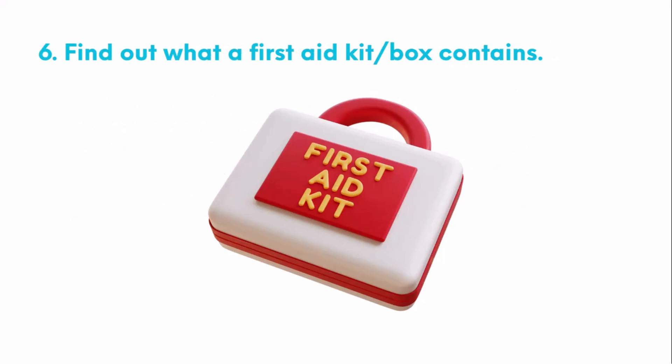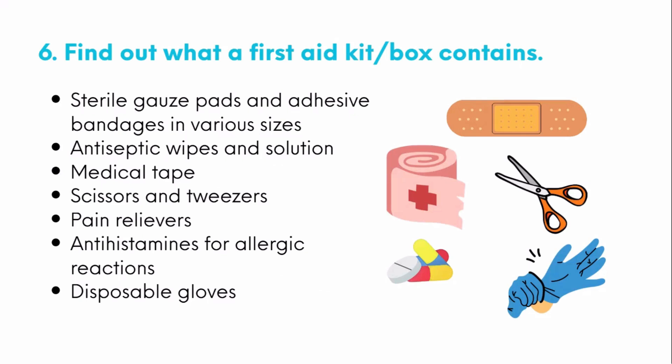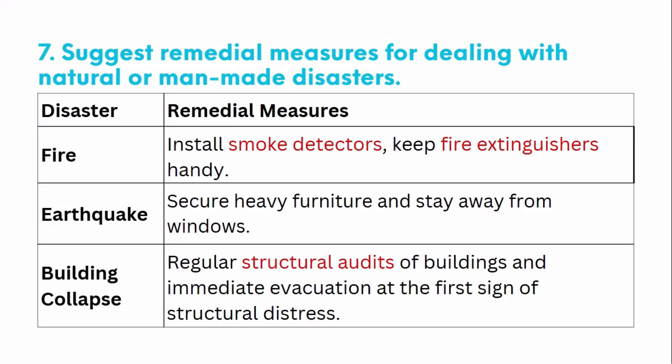Next, find out what a first aid kit or box contains. The items in a first aid kit are: sterile gauze pads and adhesive bandages in various sizes, antiseptic wipes and solutions, medical tape, scissors and tweezers, pain relievers, antihistamine for allergic reactions, and disposable gloves.